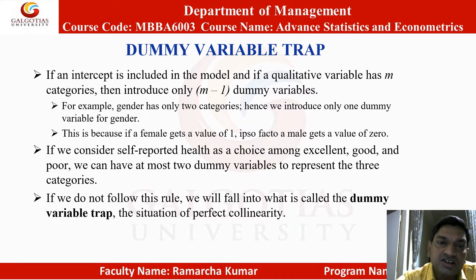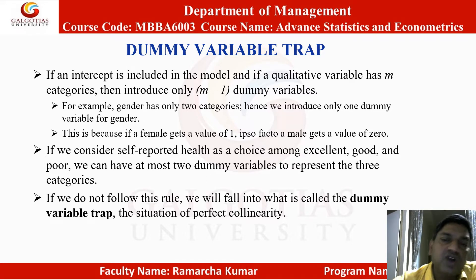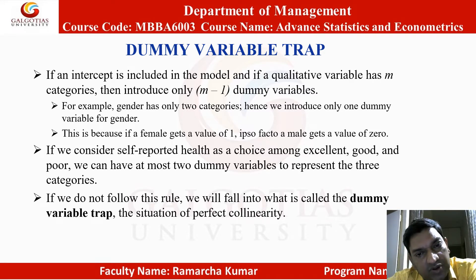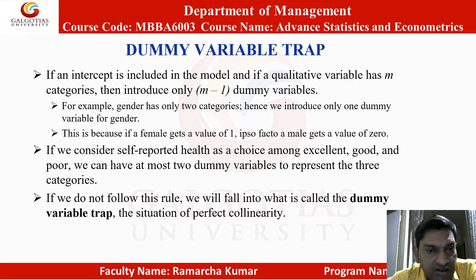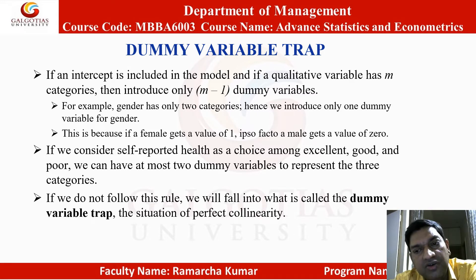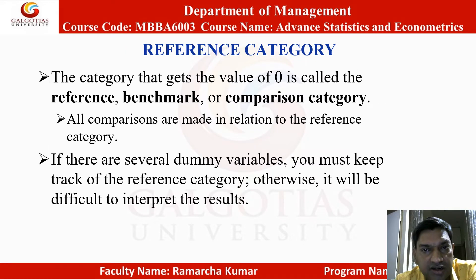If we consider self-reported health as a choice among excellent, good, and poor, we can have at most two dummy variables to represent the three categories. If we do not follow this rule, we will fall into what is called the dummy variable trap — the situation of perfect collinearity.